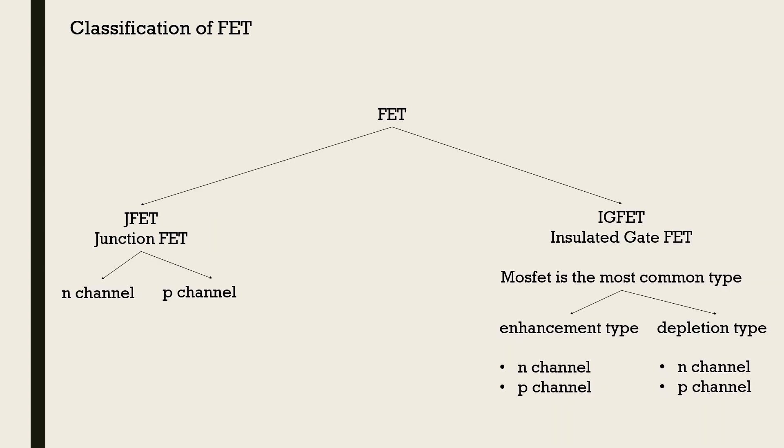Classification of FET. The first type is J-FET or junction FET, the device we commonly refer as FETs. Then they are subdivided into N-channel and P-channel J-FETs. The second type is insulated gate FET or IGFET. Just as the name suggests, there is an insulation layer at the gate. MOSFET is the most common type of IGFET. It can be further classified into enhancement type and depletion type. We shall see about MOSFETs in another video.